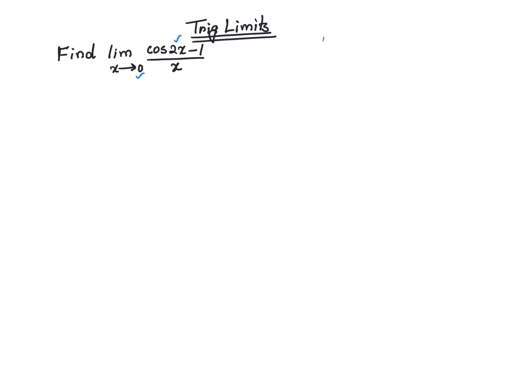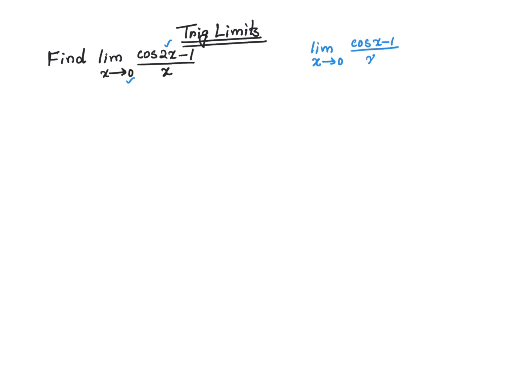To find this limit, I'm going to use this limit formula, limit rule. The limit as x approaches 0 of cosine of x minus 1 over x is actually equal to 0.